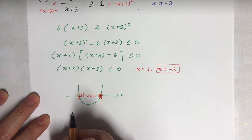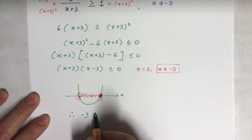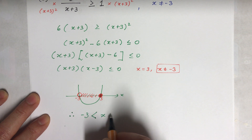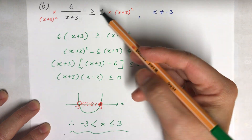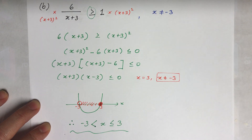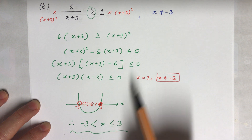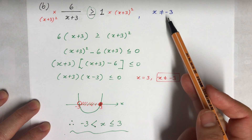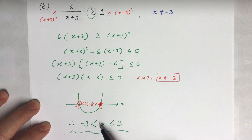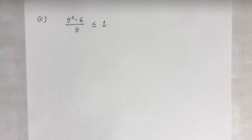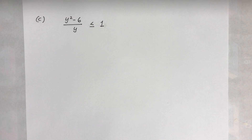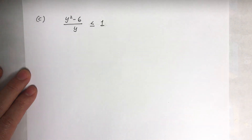The final answer for this inequality must not include -3, even though the question has ≤. Be very careful: the condition x ≠ -3 means we use an open circle for -3. The answer is: -3 < x ≤ 3.